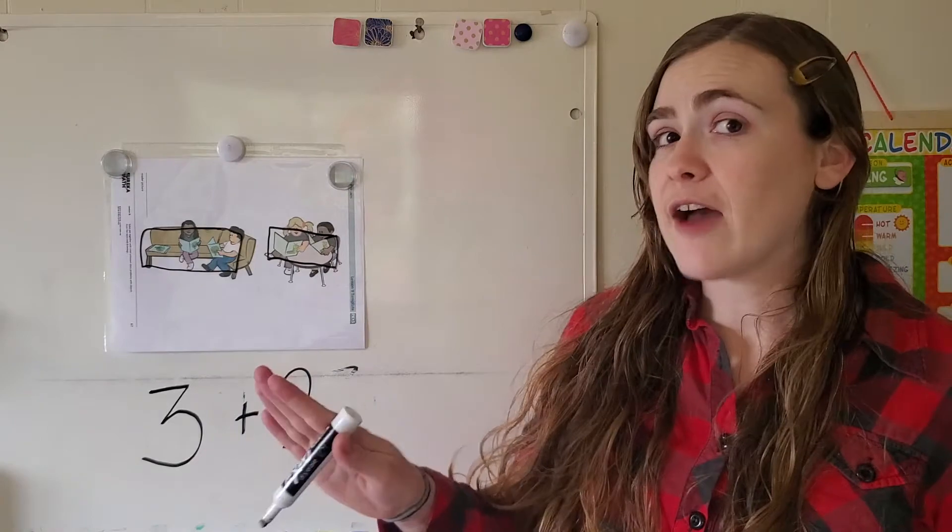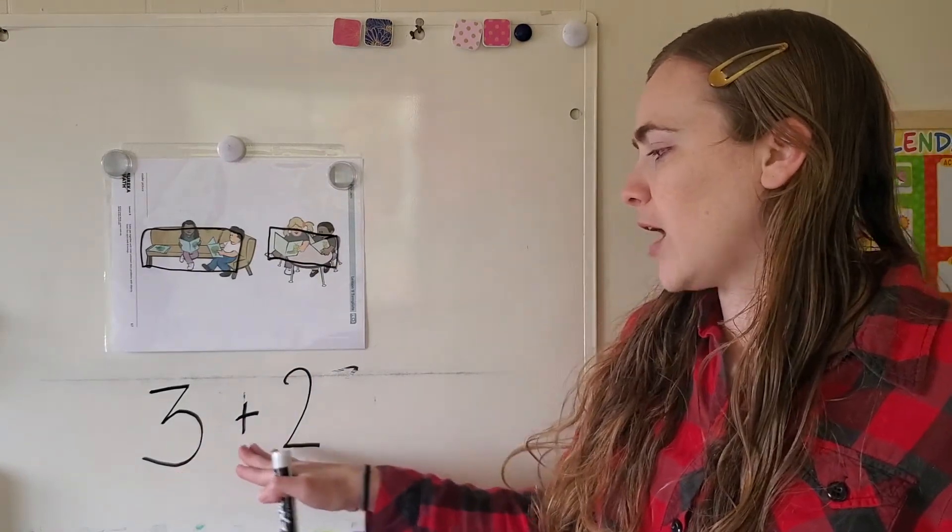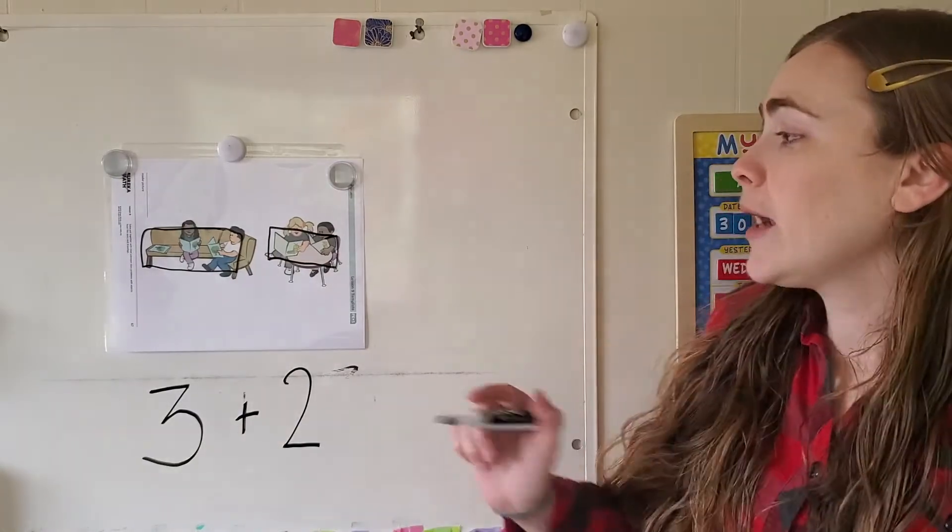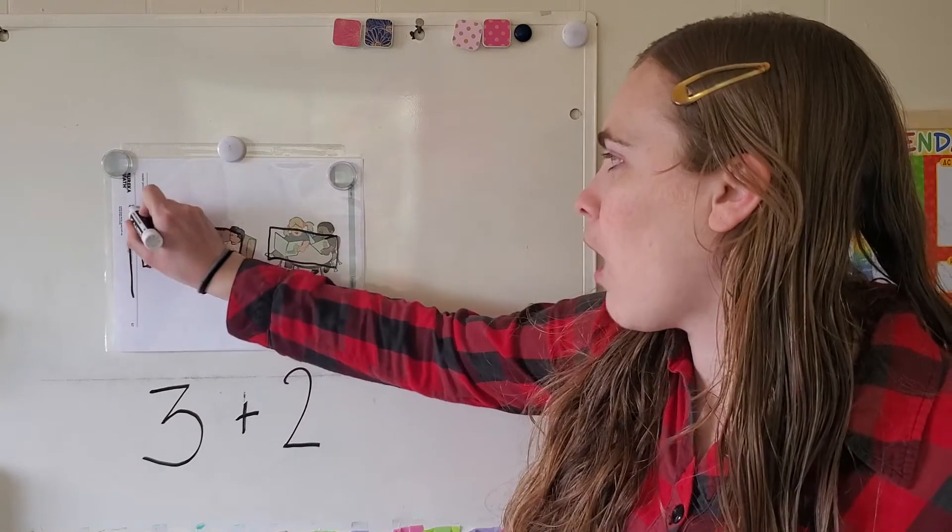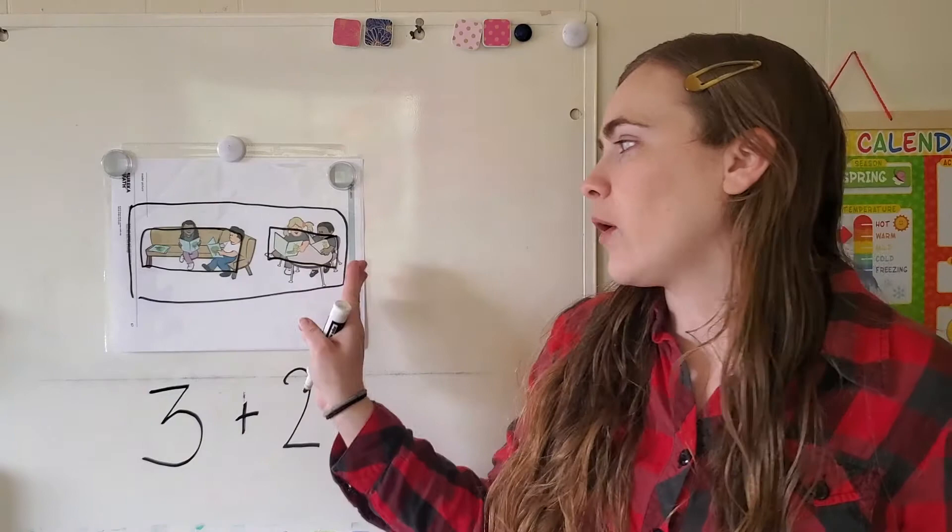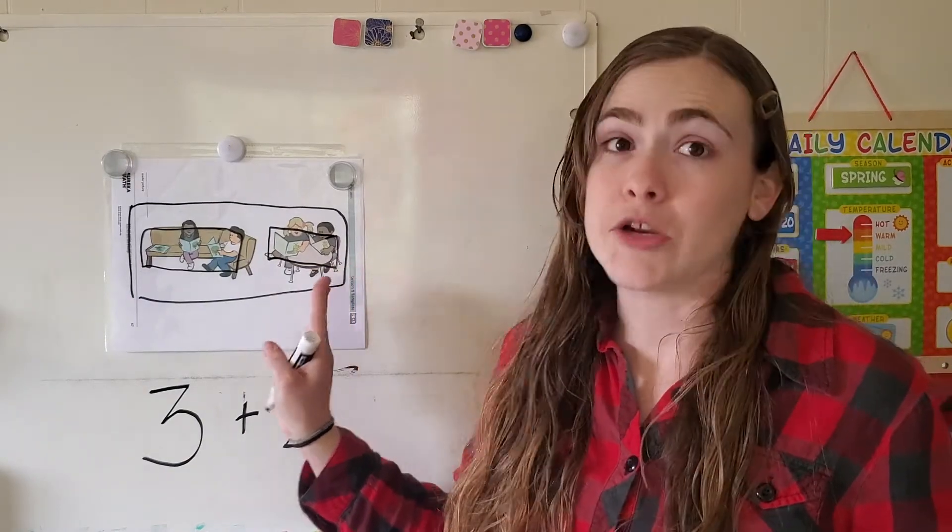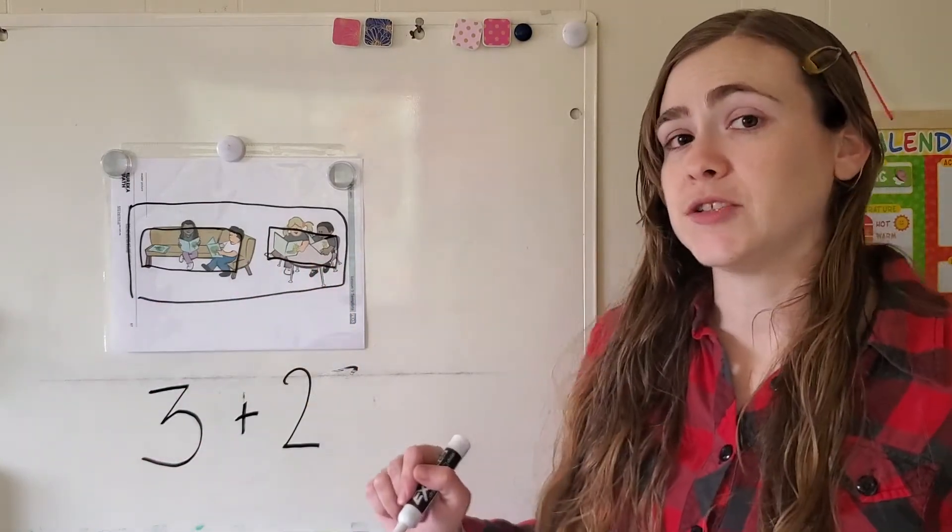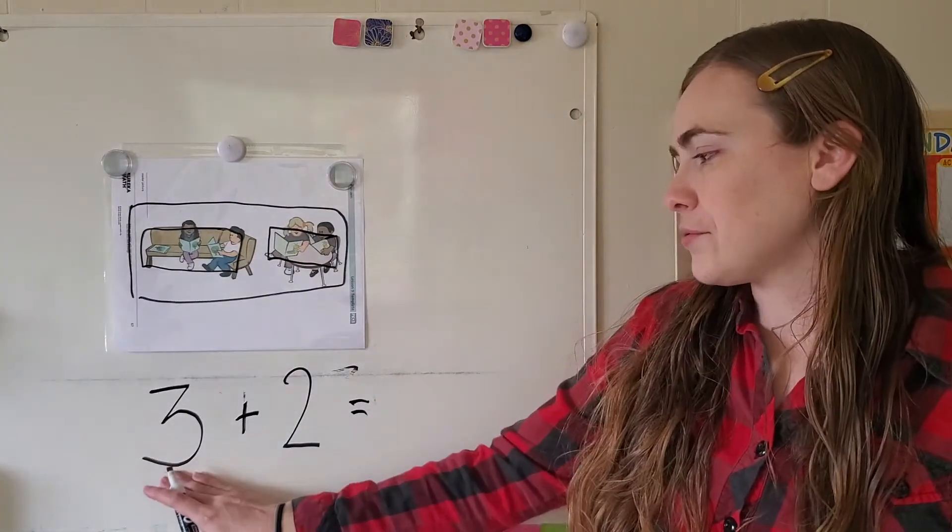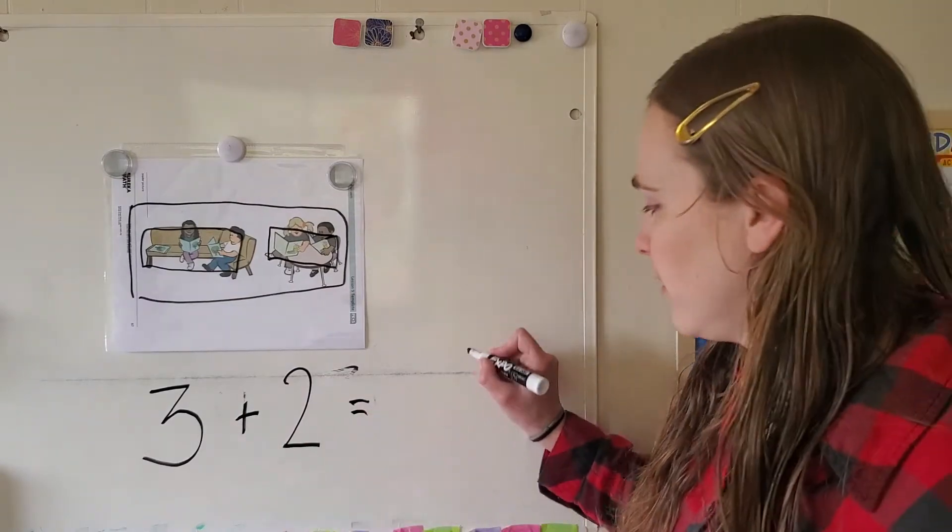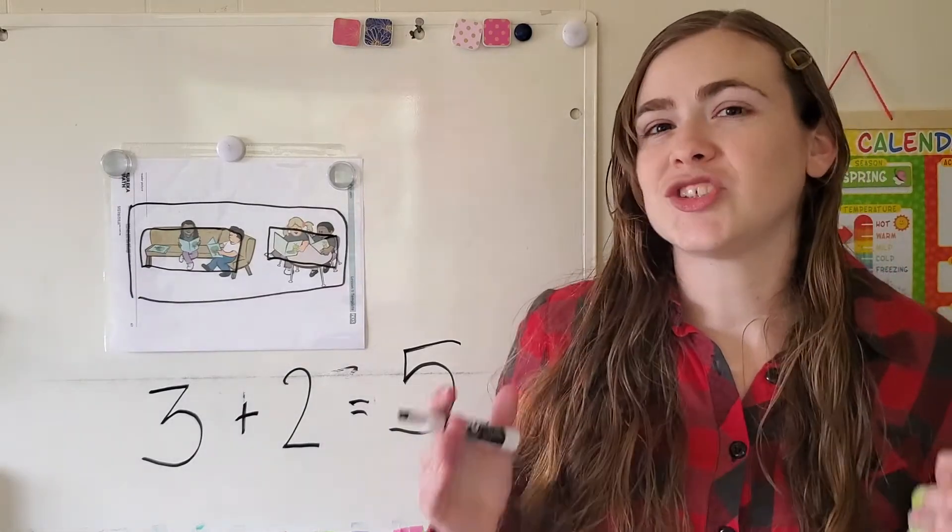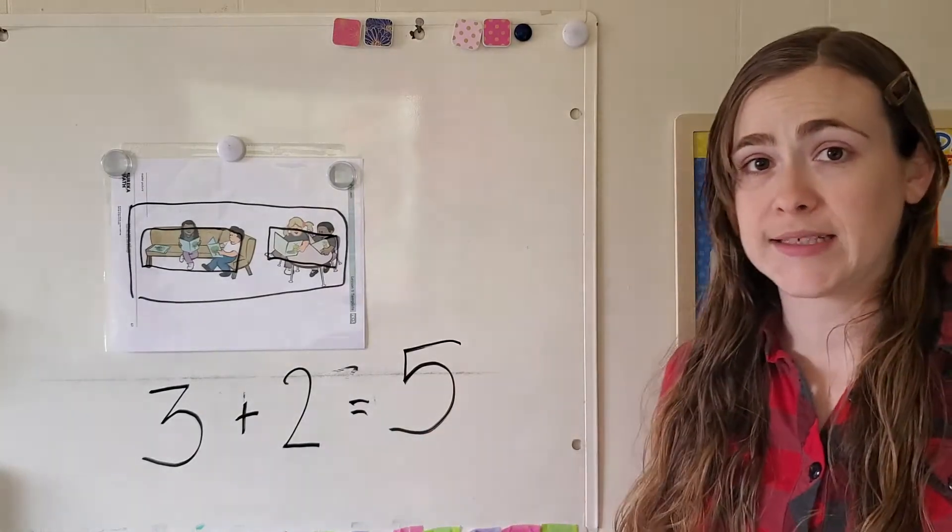We already have most of our sentence three plus two, but we need to know what it is together. So I'm going to draw a box around all of my books to show me that now I need to figure out how many there are in all. Now one way I can do this is by using my equation. I know that three plus two equals five, but I always want to double check to make sure my answer makes sense.